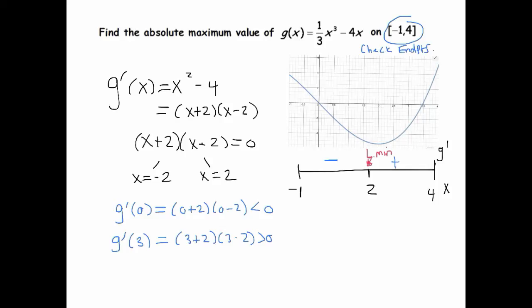By the first derivative test, at negative 1, I also have a min. I'm sorry, I have a max, because the function, the derivative is negative to the right of it, which means your function is decreasing. So I've got a max here, a local max. And also at 4, because the function is, the derivative is positive to the left of 4, which means the function is increasing up to 4. So that's a local max.